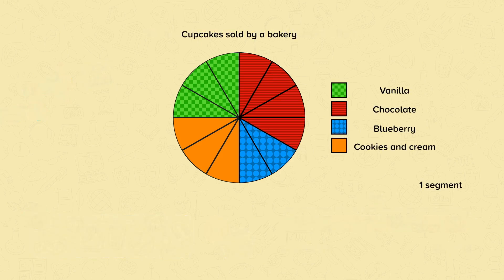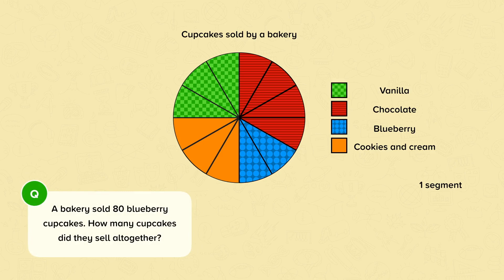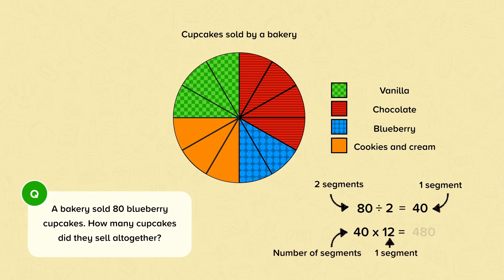This pie chart shows the different cupcakes sold by a bakery. The bakery sold eighty blueberry cupcakes. How many cupcakes did they sell altogether? We know that eighty blueberry cupcakes are represented by two blue segments, so each segment represents eighty divided by two, which is forty. There are twelve segments altogether, so we calculate forty multiplied by twelve, which is four hundred and eighty. The bakery sold four hundred and eighty cupcakes altogether.